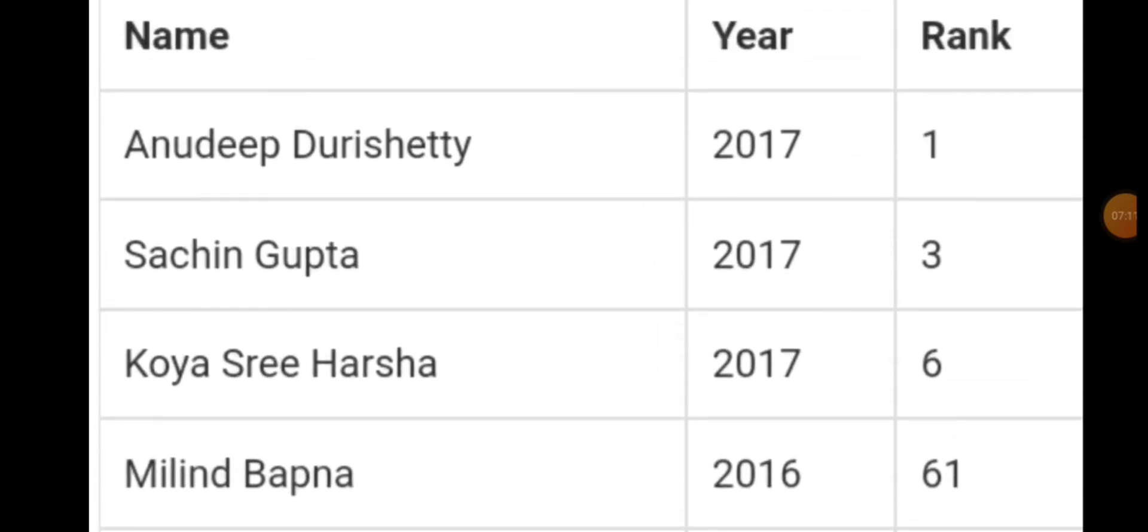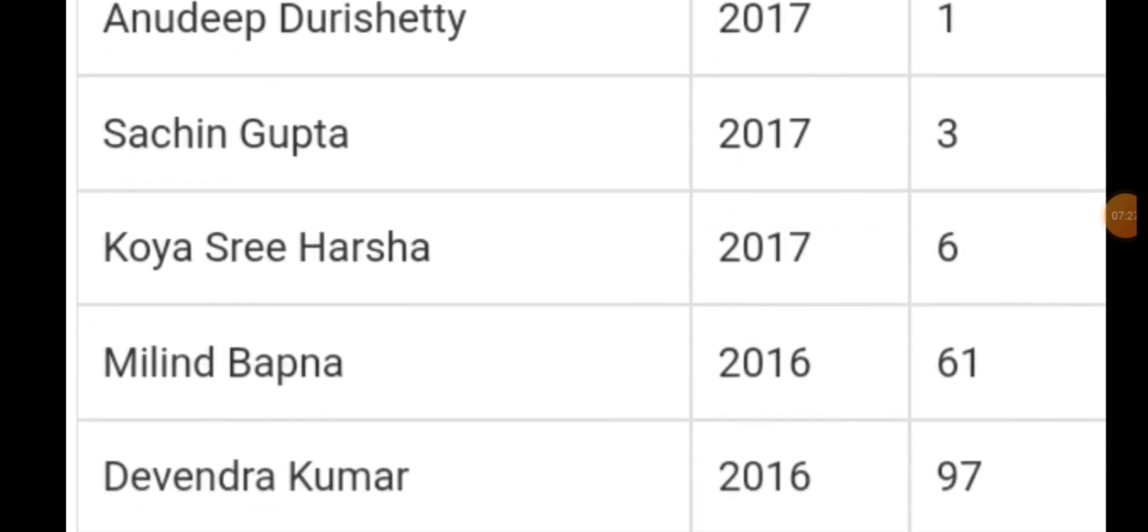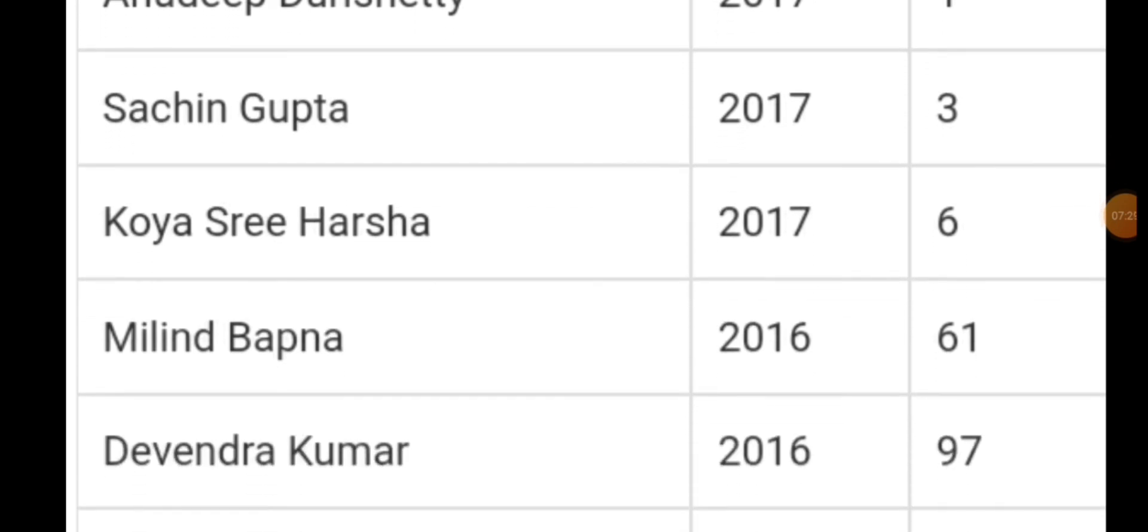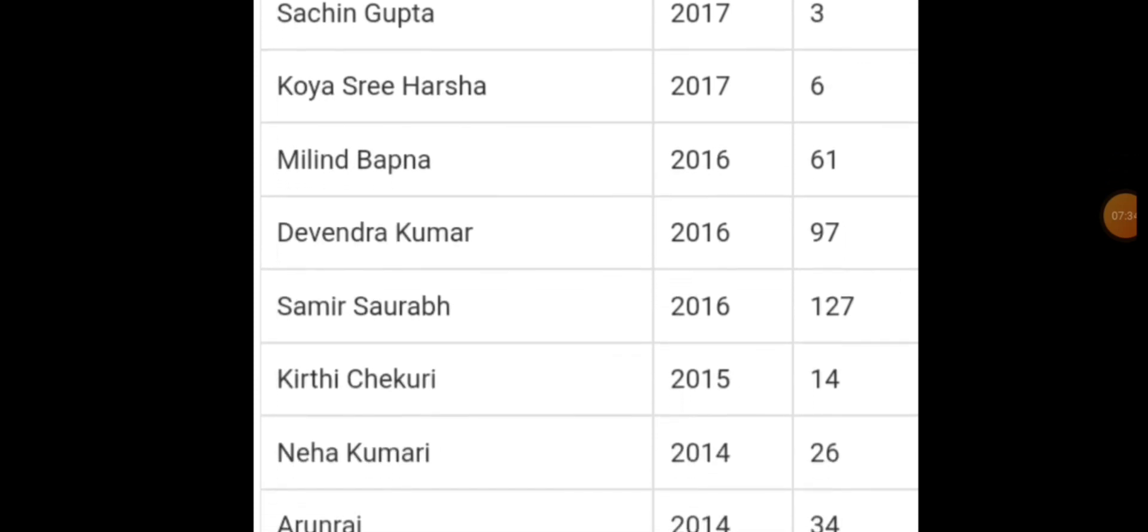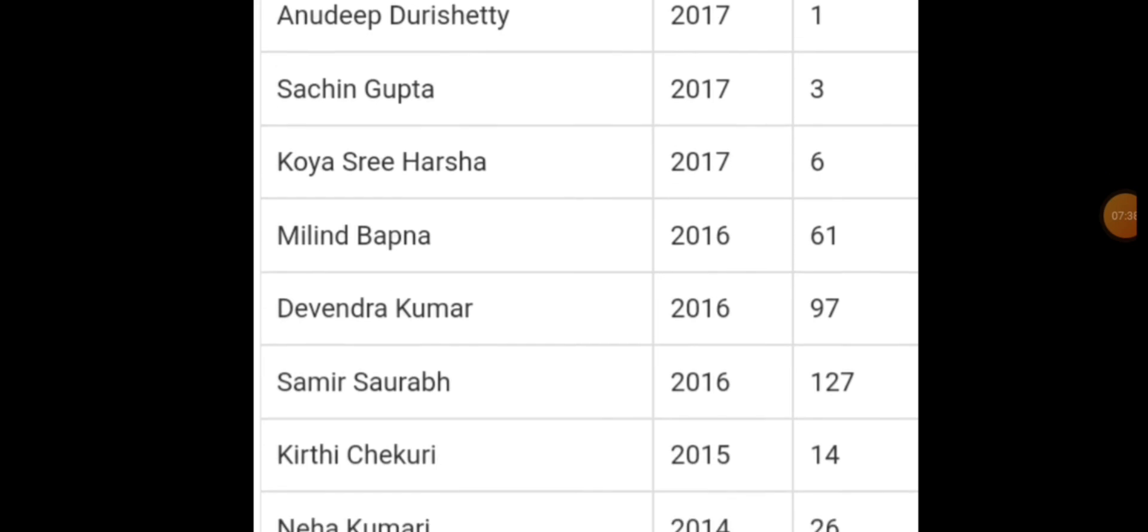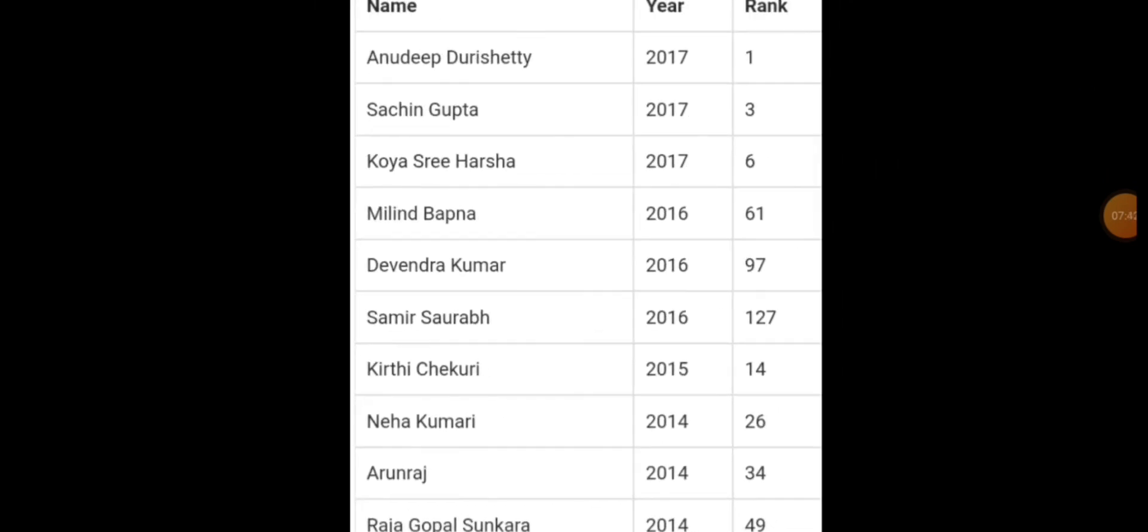Here are some toppers, their rank, and what year. First is Anudeep Durishetty sir - this is the most famous topper with this optional. You can check their notes. Then Sachin Gupta sir, Koya Shri Harshan. I'm not going to read the whole list. You can see that they have got good ranks - top ranks like 1, 3, 6, 14. So it's a good subject, and they've got such big ranks.